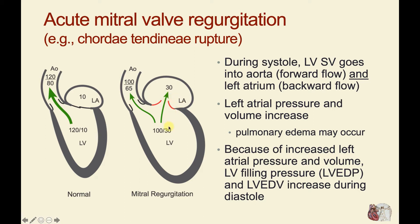Because of this flow going back into the left atrium during ventricular systole, left atrial pressure will become greatly increased — shown here as 30 millimeters of mercury, which is well over the threshold that would cause pulmonary edema. Because of the increased left atrial pressure and this volume overload condition, as the left ventricle fills with blood, it fills to a higher pressure, so left ventricular end-diastolic pressure may also be greatly elevated.